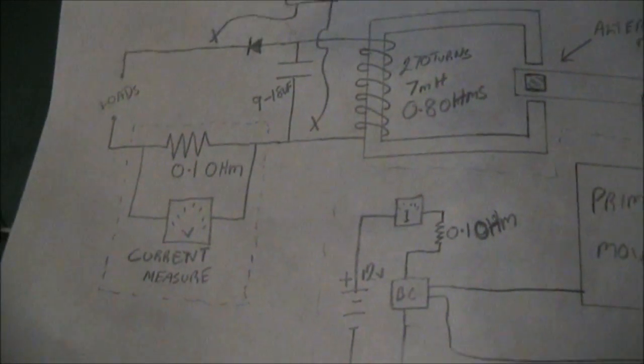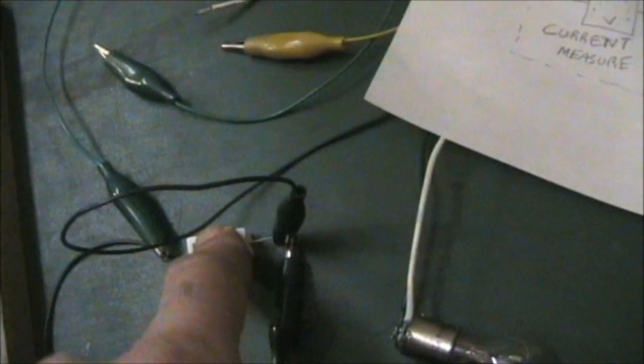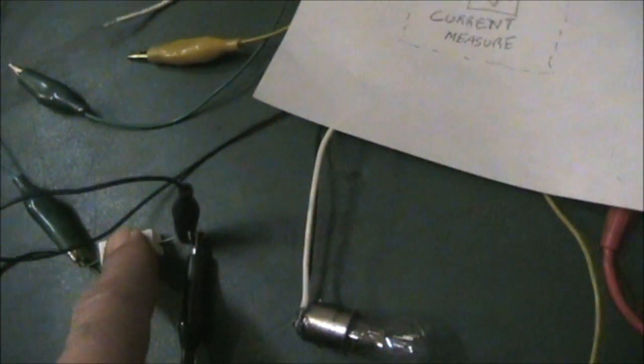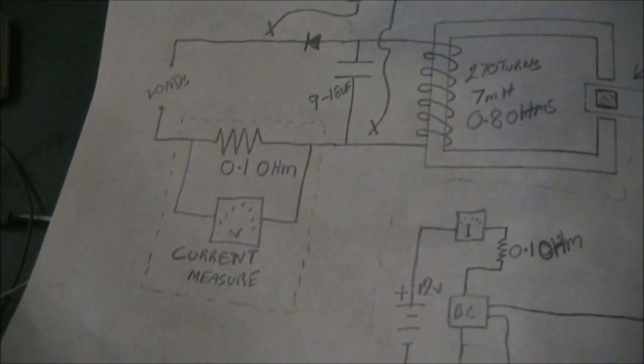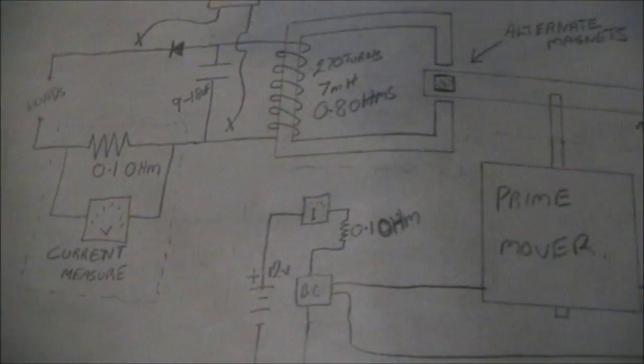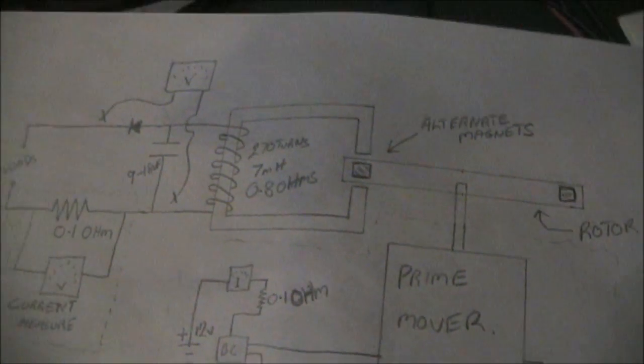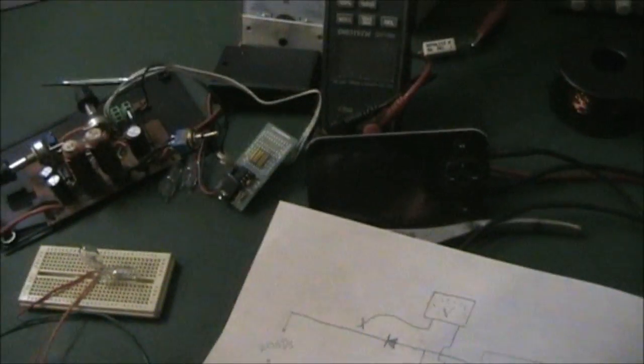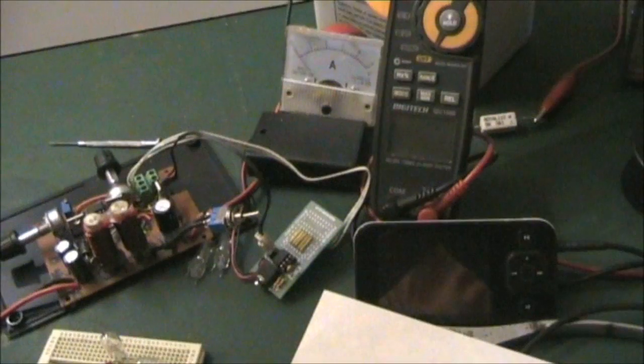I think the drawing there pretty much sums it up. Well, I can measure the voltage across this point, one ohm resistor and return from the light. This is not an efficiency test or anything like that. This is just to show a few different things that are happening with the effect and show the effect sort of thing.